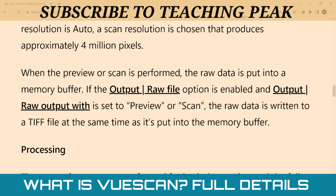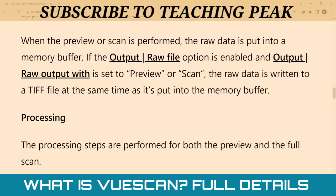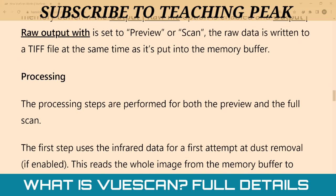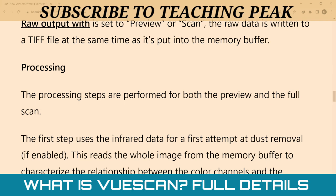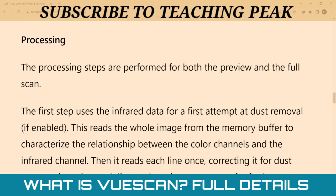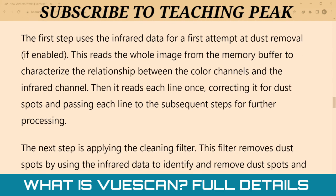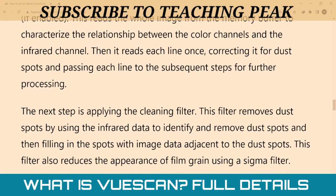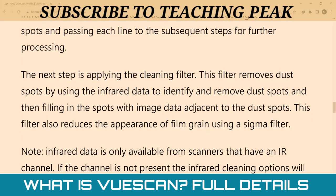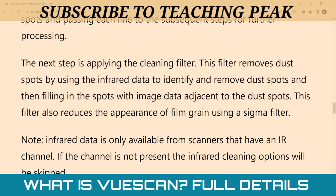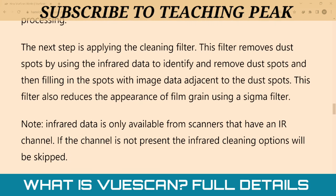The processing steps are performed for both the preview and the full scan. The first step uses the infrared data for dust removal if enabled. This reads the whole image from the memory buffer, characterizes the relationship between the color channel and the infrared channel, then reads each line once correcting for dust spots and passing each line to subsequent steps. The next step is applying the cleaning filter, which removes dust spots using the infrared data to identify and fill in spots with image data.